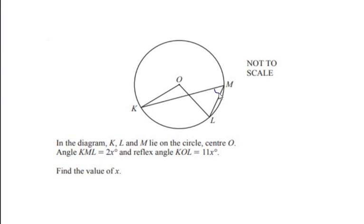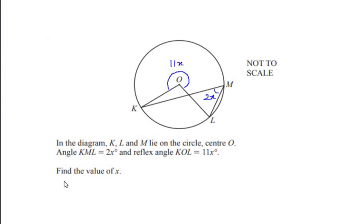The reflex angle KOL is equal to 11x degrees. A reflex angle is an angle which is greater than 180 degrees but less than 360 degrees. In this case they have given the reflex angle, which is this part of the angle, as 11x degrees. We have to find out the value of x.